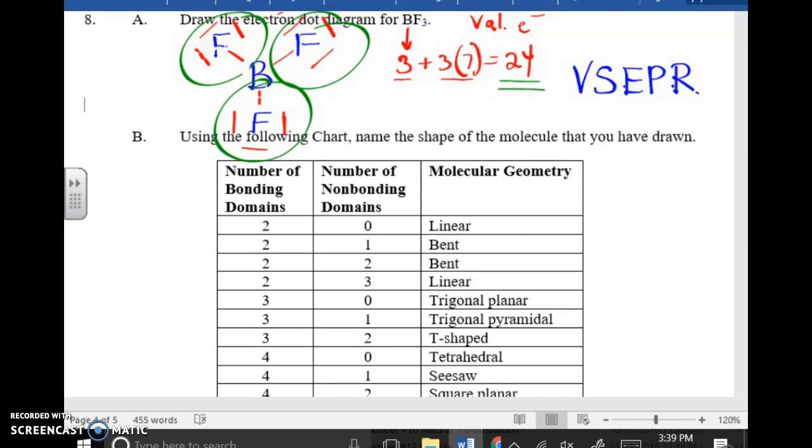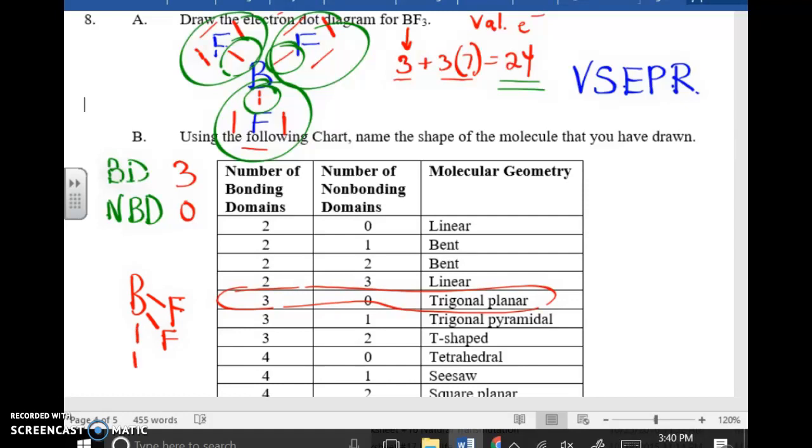All that's left now is to go to part B and to see what's the shape of a molecule. Well, I have to count up the number of bonding domains and the number of non-bonding domains on the molecule. Bonding domains means number of bonds, bonding areas that are touching. There are three such areas. And notice there are no lone pairs of electrons, or I should say non-bonding pairs of electrons. So that's zero. Well, I go to my table. I say three bonding domains, zero non-bonding. That means the shape of the molecule's trigonal planar.